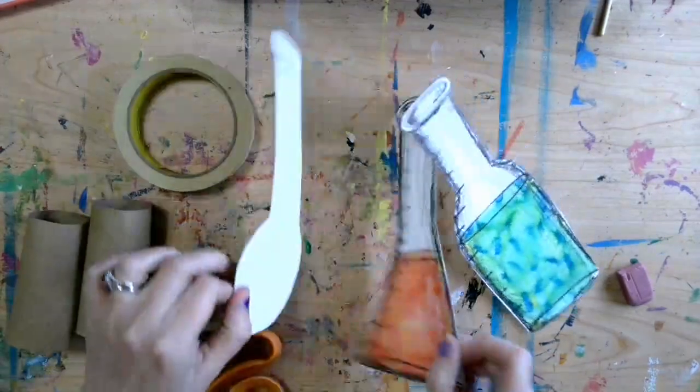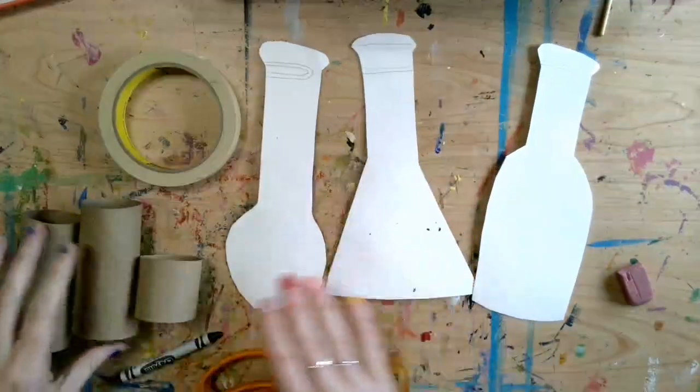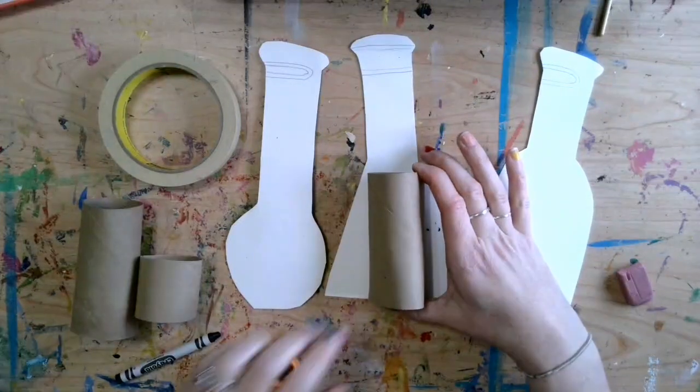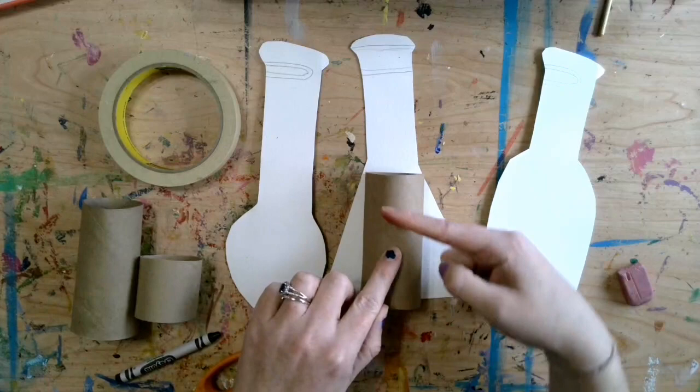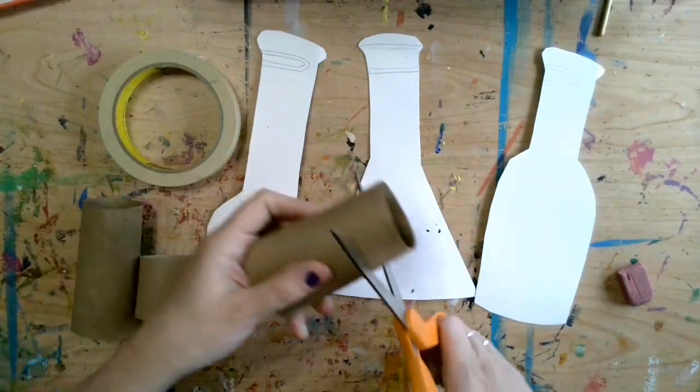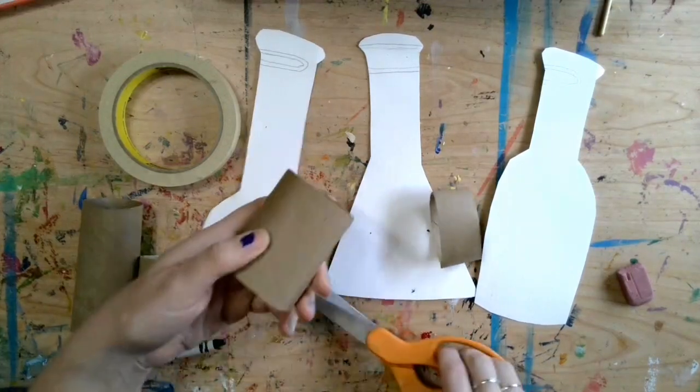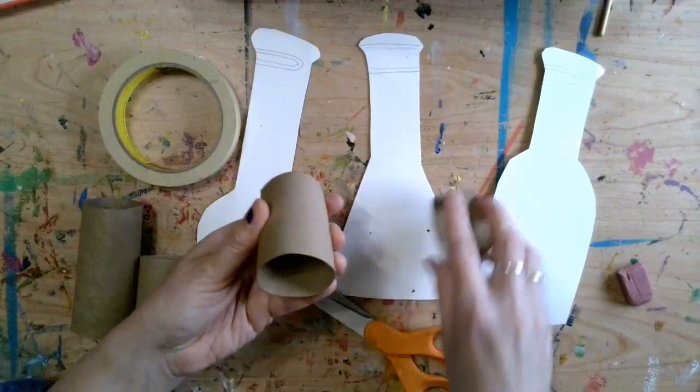So I'm going to flip these guys over and I'm going to take my toilet paper tubes and kind of find the spot where they're not going to be seen. So I know that this is going to be mostly covered, though I feel like it could be a little bit shorter. So I'm just going to cut this one.